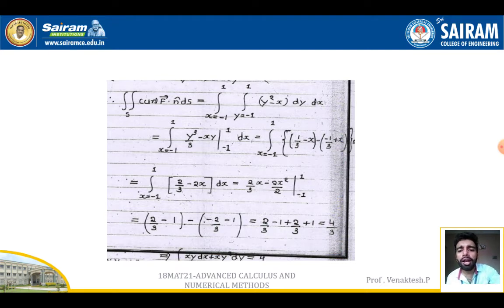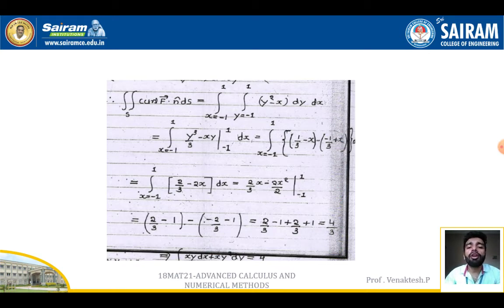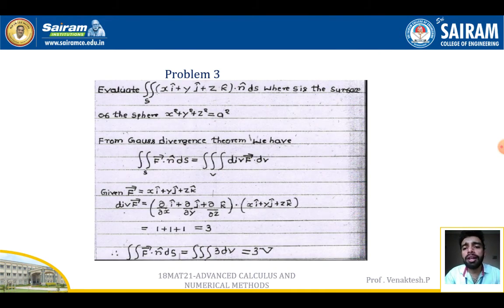Integrating with respect to x: [2x/3 − x²]₋₁¹. After applying the limits and simplifying: (2/3 − 1) − (−2/3 − 1) = 4/3. Hence the value of the integral using Stokes' theorem is 4/3.